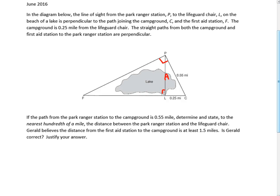Gerald believes the distance from the first aid station to the campground is at least 1.5 miles — is Gerald correct? Justify your answer. The first thing we can do is we don't even really need to do hills and sass. If we want to find the distance from P to A, we can see that this is a right triangle, so we can use the Pythagorean theorem: A squared plus 0.25 squared equals 0.55 squared.